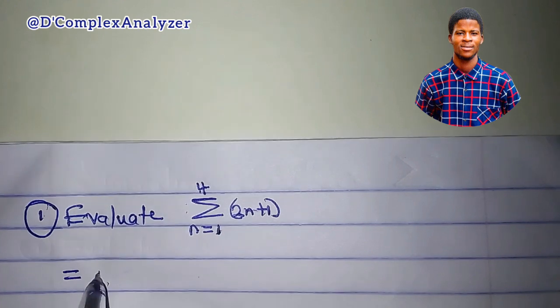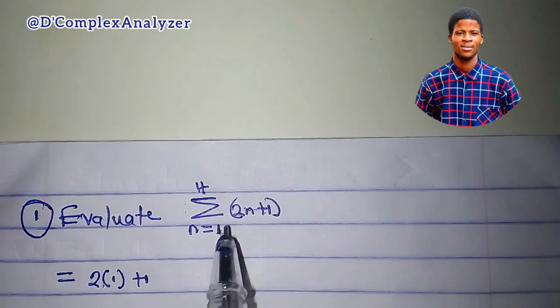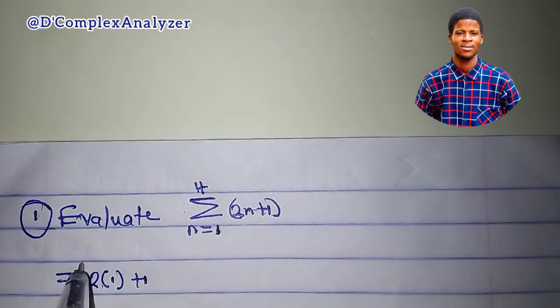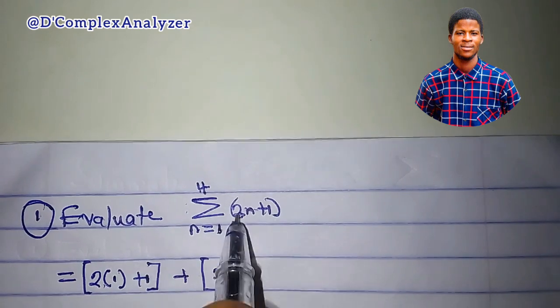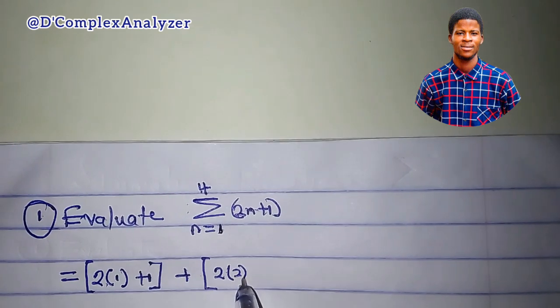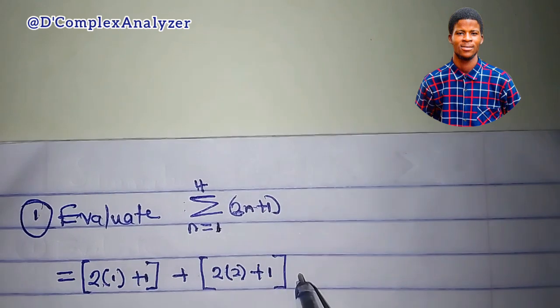We'll have 2 times 1 plus 1. n is 1, which is the first term, plus 2 here times 2, because n equal to 2 for the second term, plus 1.